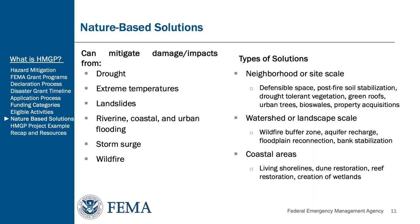Here we take a look at nature-based solutions. Nature-based solutions are sustainable planning, design, environmental management, and engineering practices that weave natural features or processes into the built environment to build resilient communities and mitigate the impact of climate change. FEMA uses the term nature-based solutions to refer to an umbrella of strategies including green infrastructure, bioengineering, and natural infrastructure. Nature-based solutions can be used to mitigate impacts or damages from drought, extreme temperatures, landslides, coastal and urban flooding, storm surges, and wildfires. Some examples are urban trees, aquifer recharges, dune restoration, and coral reef restoration.